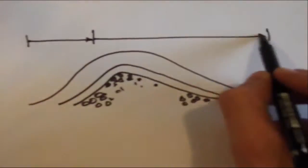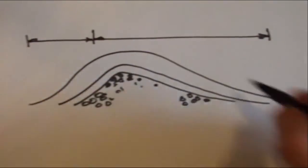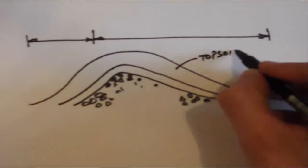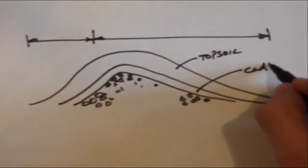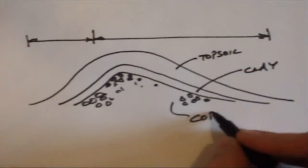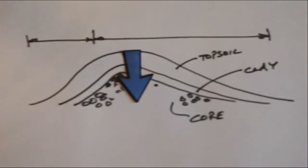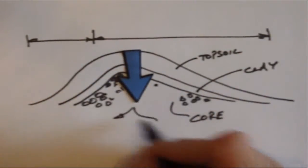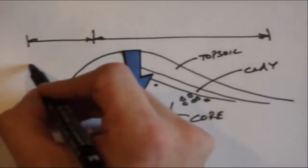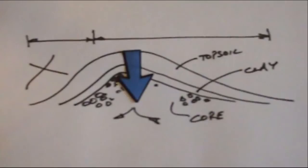They are usually asymmetrical in shape and consist of a topsoil on clay on granular core stratigraphy. The highly porous core facilitates drainage, which is exactly the opposite of what we are looking for, given the fact that we are designing a water retention berm.